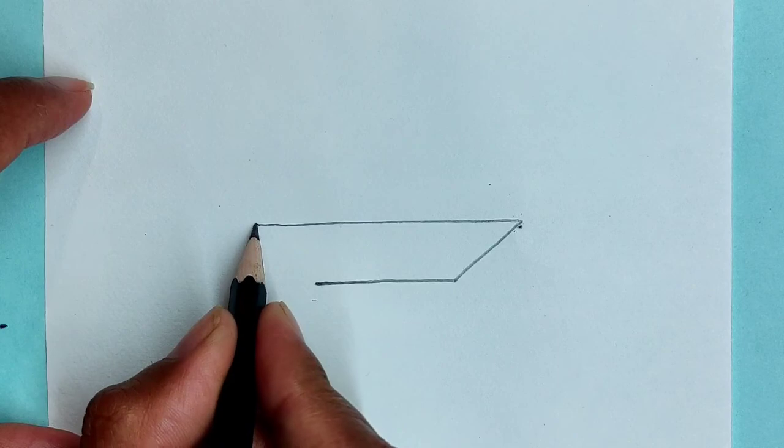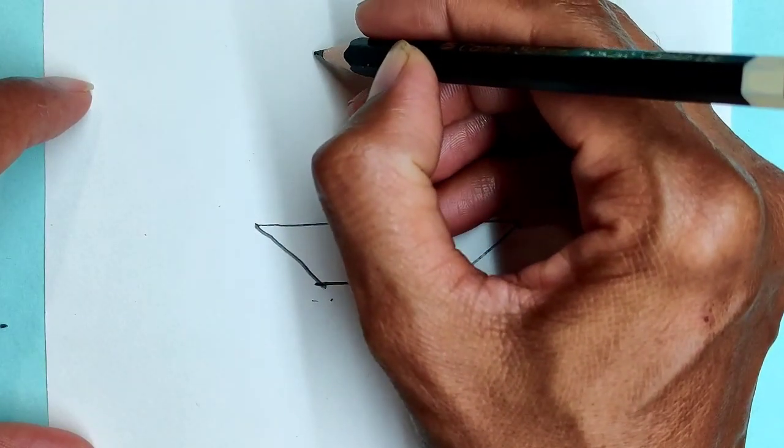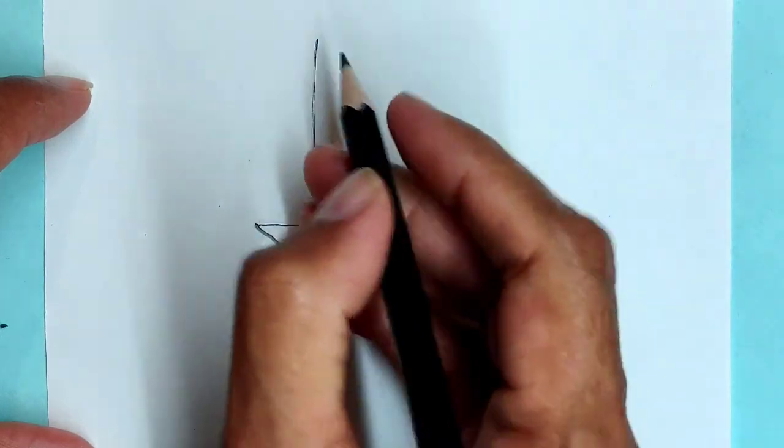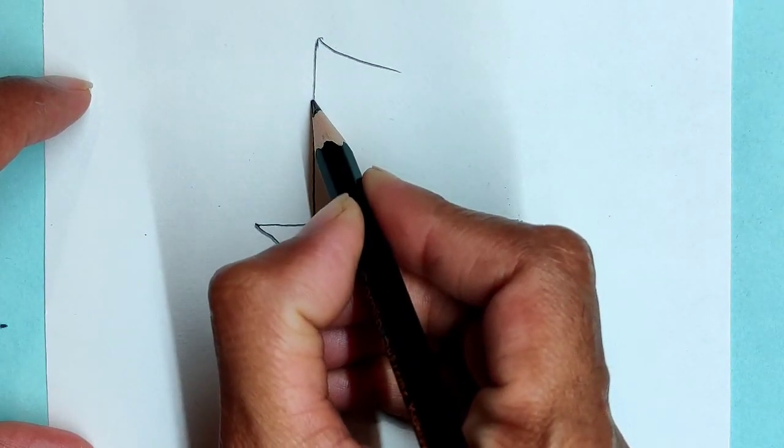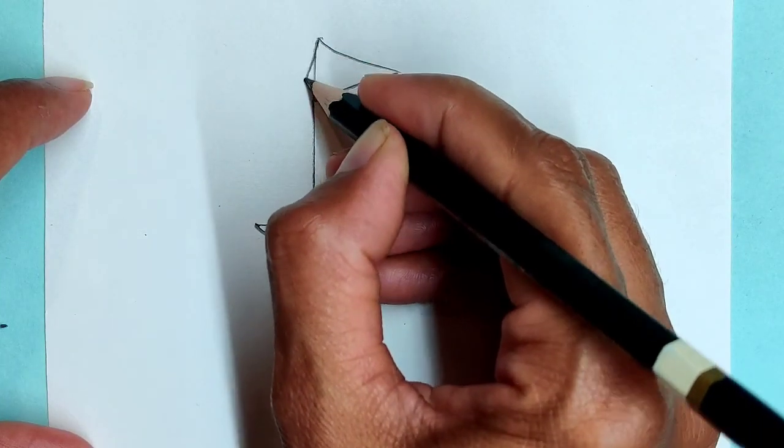Join both slanting lines with slanting lines. Our boat shape is ready. Then draw a flag on the boat and draw one slanting line as shown.